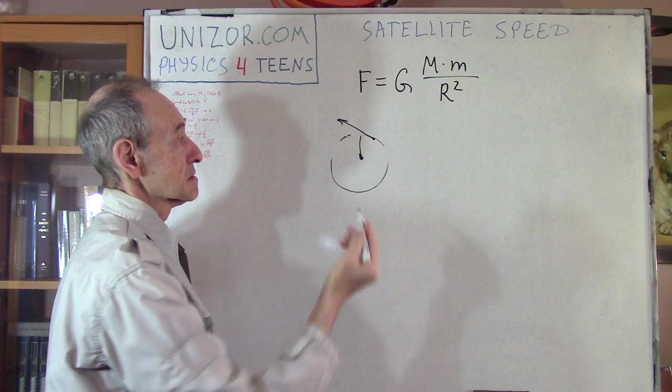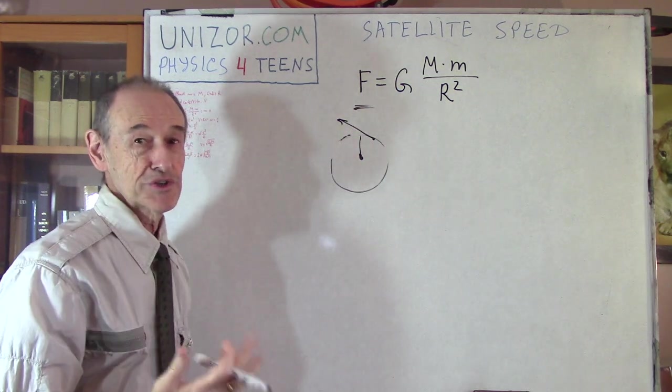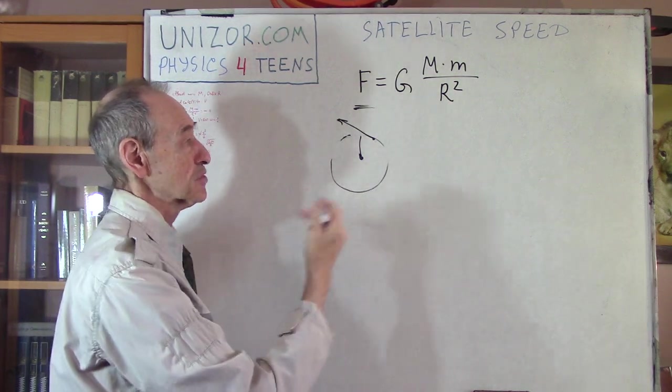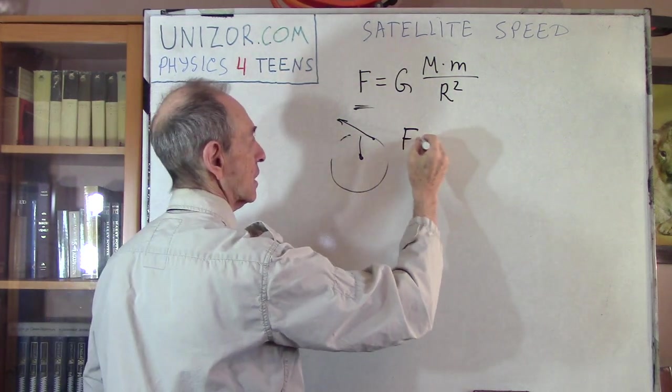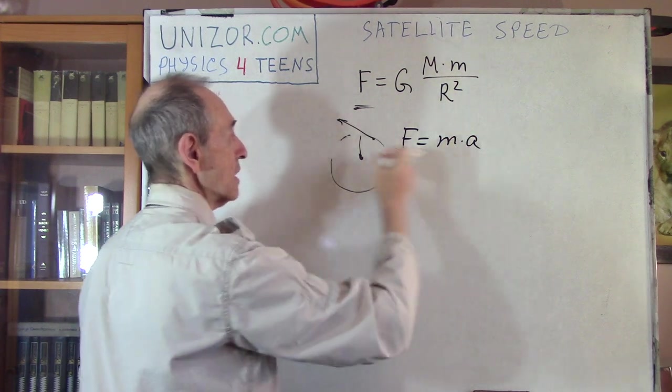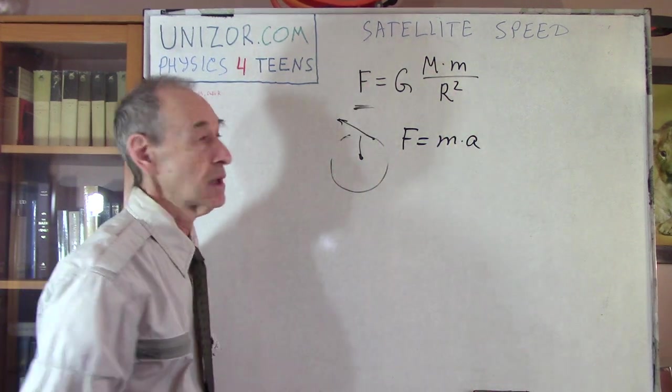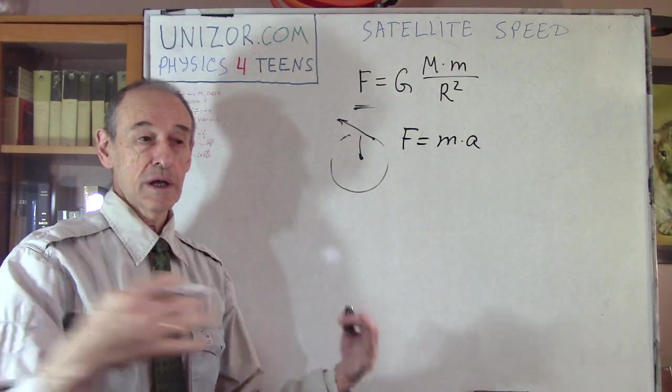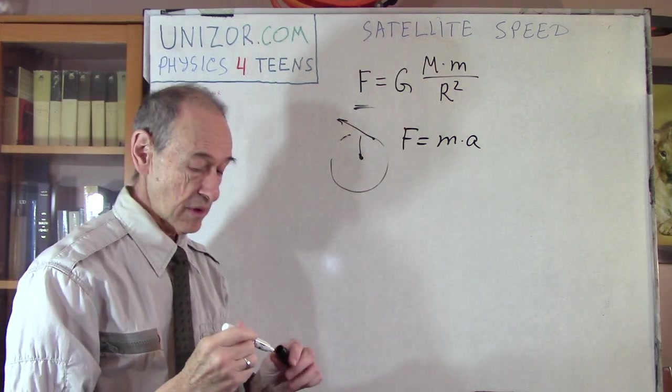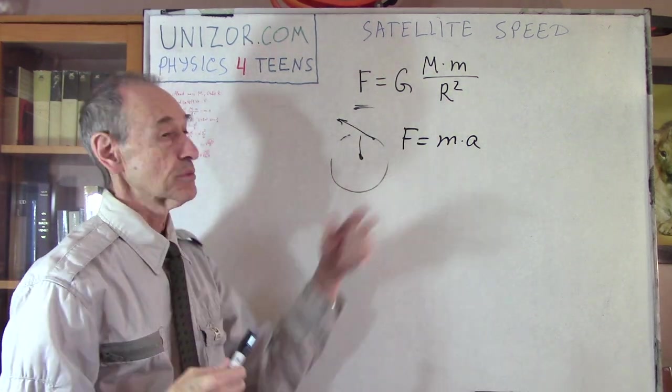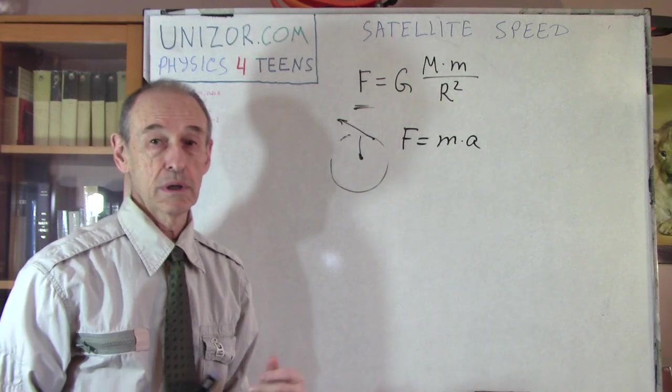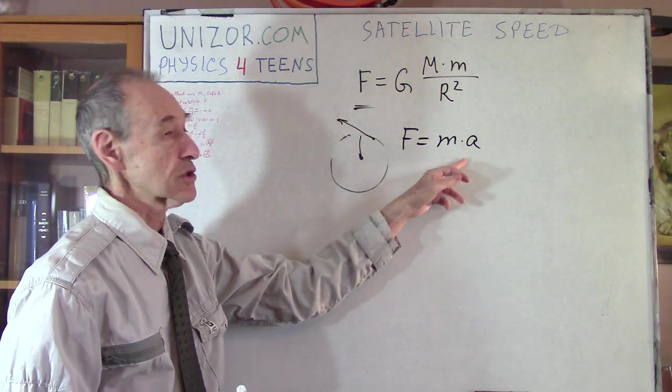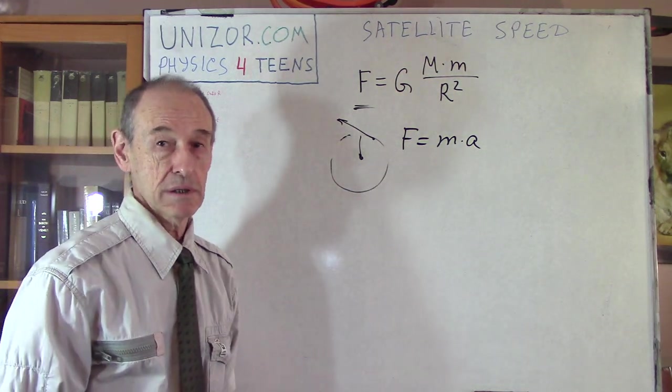And since this is actually the source of this force, we are equalizing centripetal force which can be calculated as M times A, where A is centripetal acceleration. And this one. These are the same forces just calculated from two different viewpoints. This is from the viewpoint of the gravitation law and this is from the viewpoint of pure movement laws, kinematics if you wish.